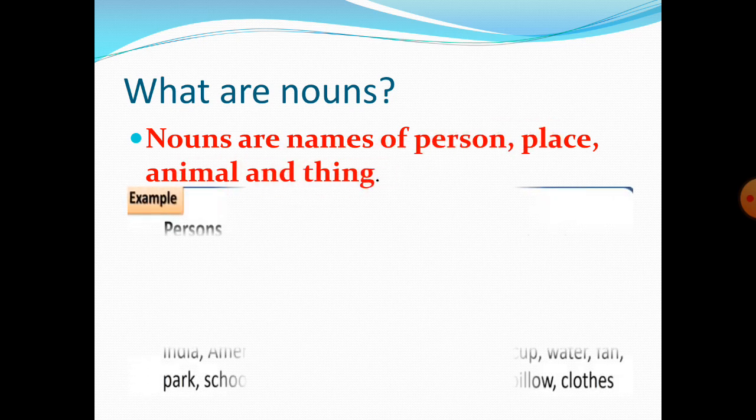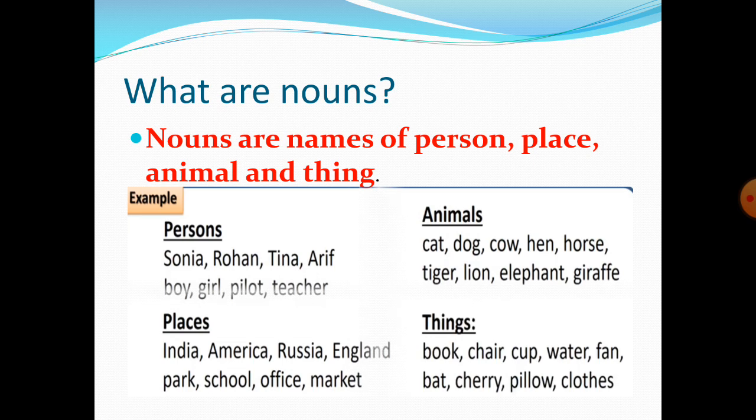Let's see some examples of persons. Sonia, Rohan, Tina, Arif — they are the names of persons. They are proper nouns.